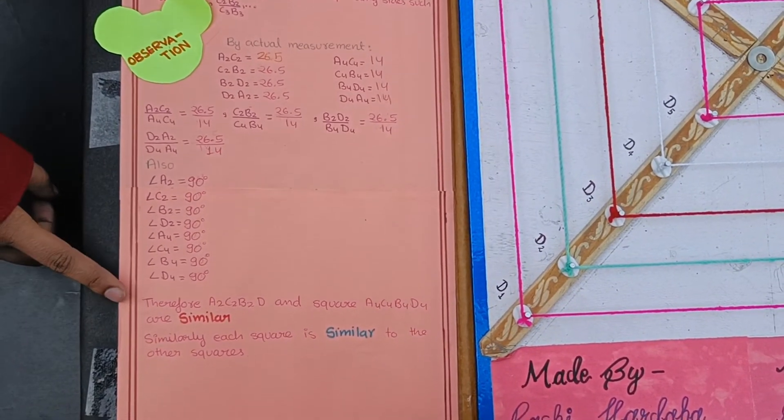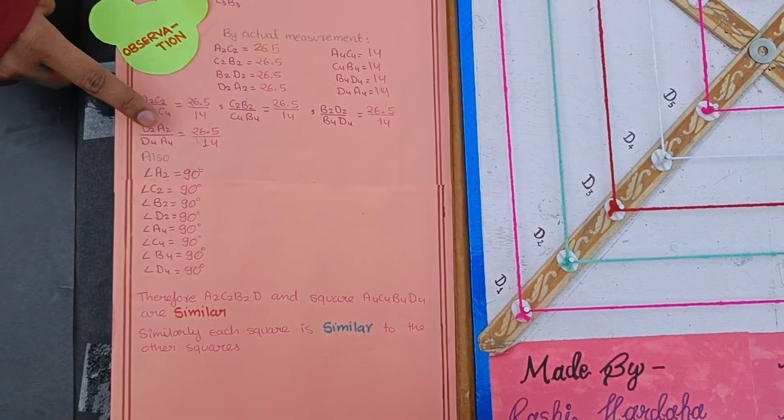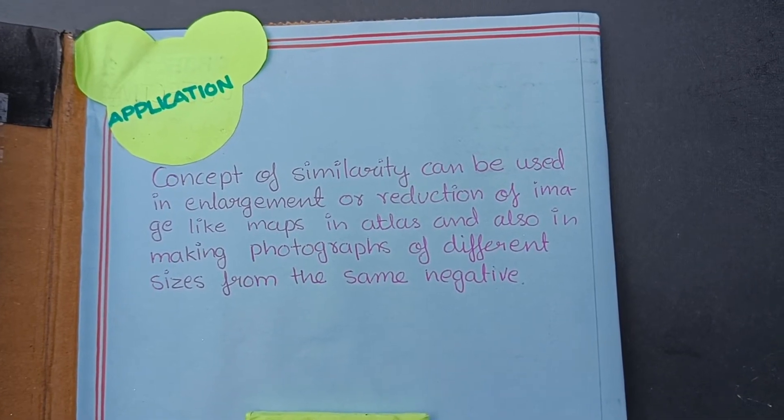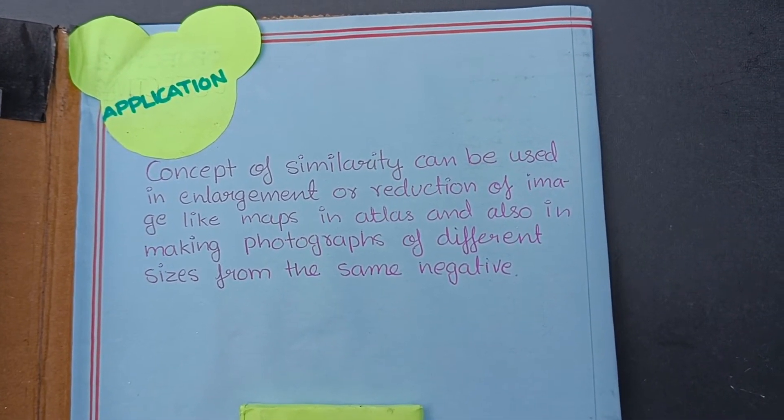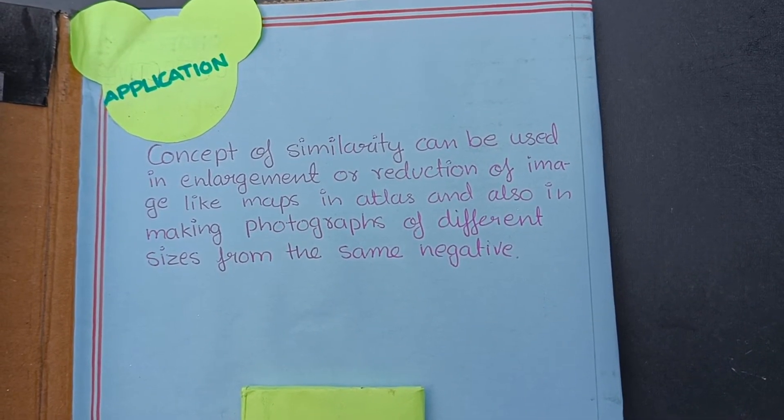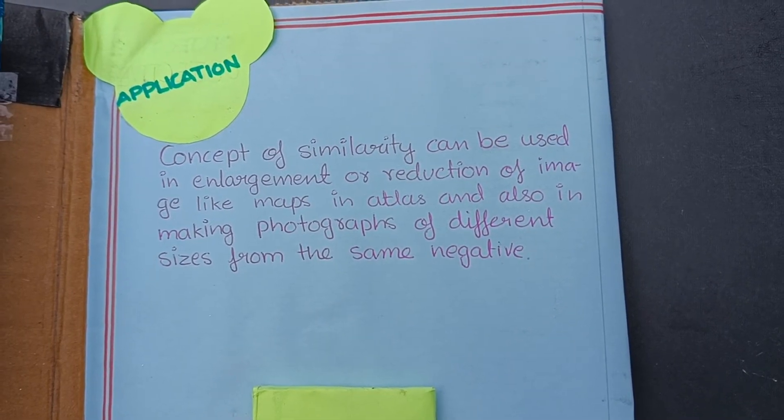All angles are equal and corresponding sides of all squares are in same ratio. Here, the application of the model is concept of similarity can be used in enlargement or reduction of image like maps in atlas and also in making photographs of the image.